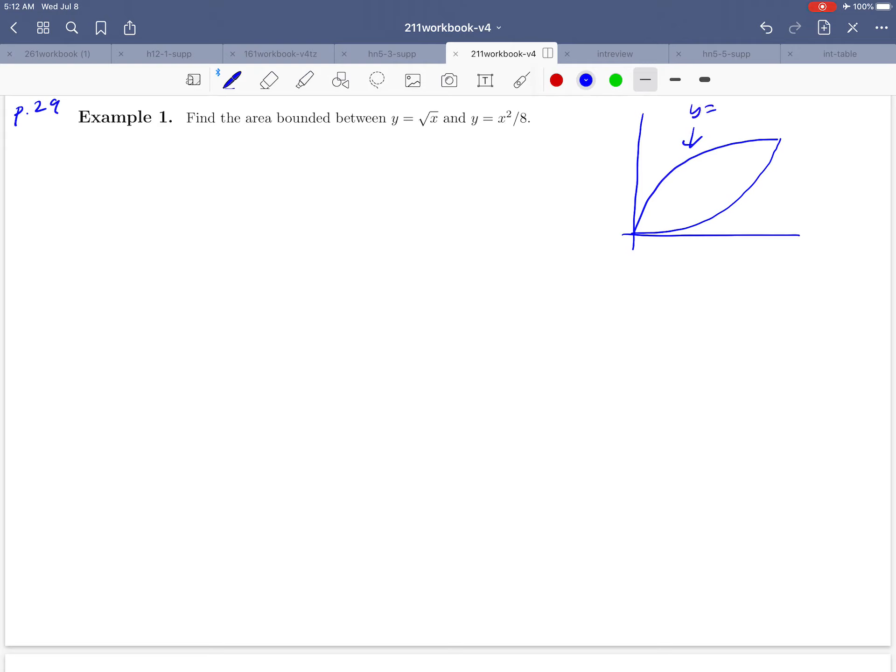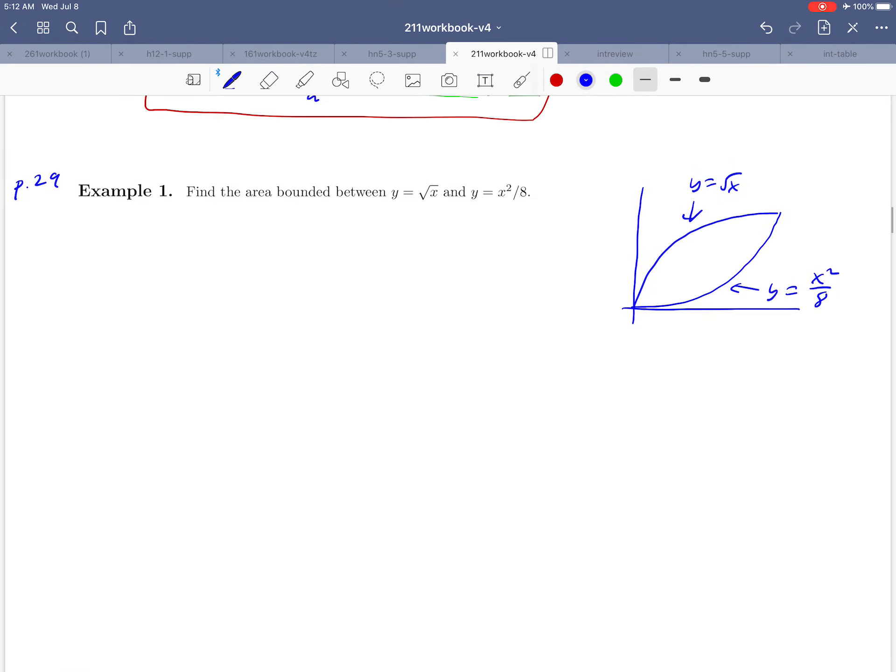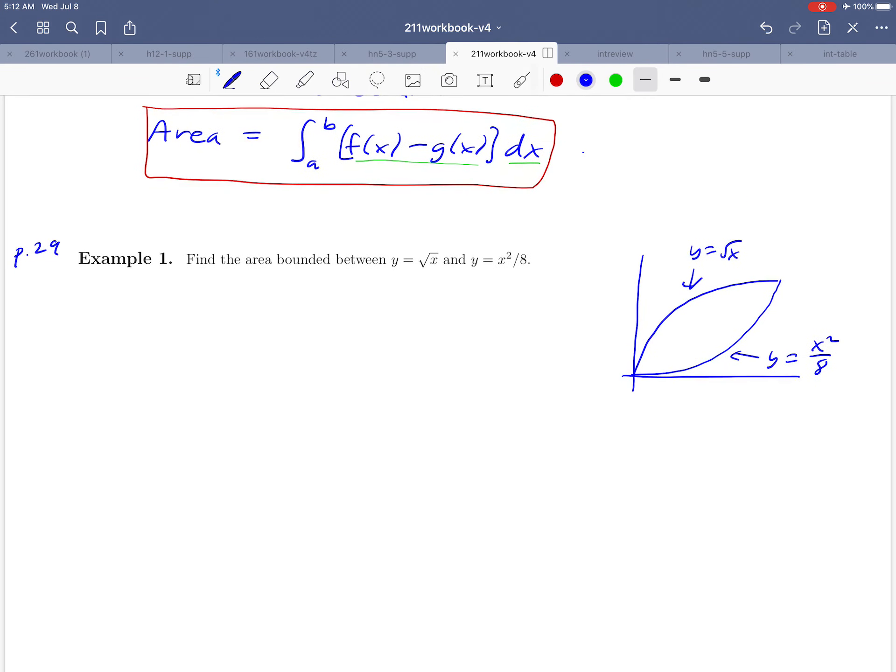Up here was the square root of x, and down here was x squared over 8. So how do we find that area? Well, we sort of derived a formula to do this above. I want to sneak a peek at that again. It looked like this. And one thing about this formula, I don't know if we mentioned it in the derivation that we did, but what was special about f and g was that f was on the top and g was on the bottom.